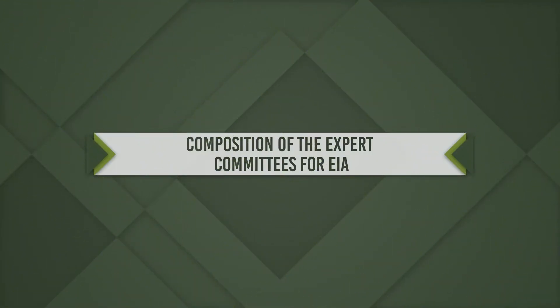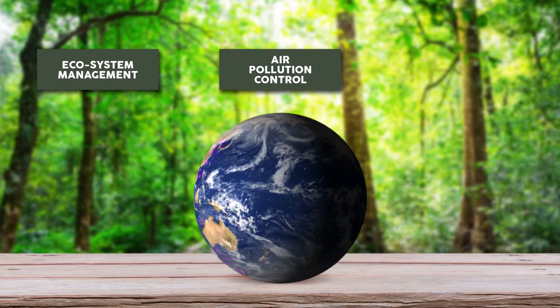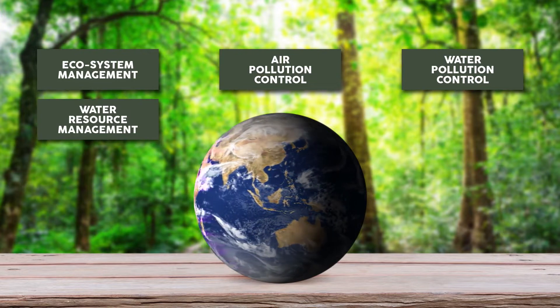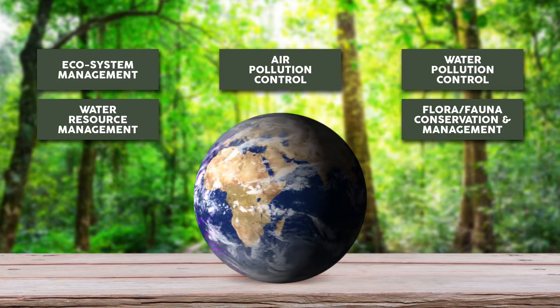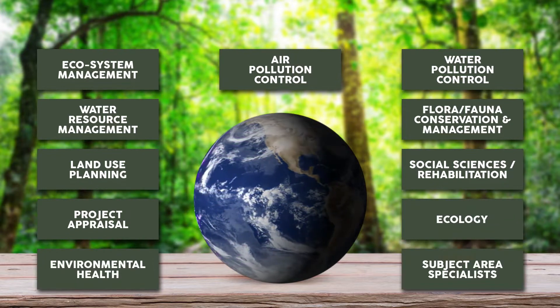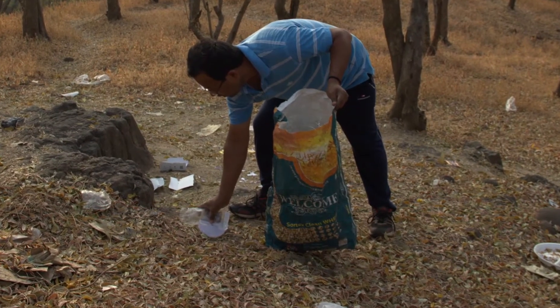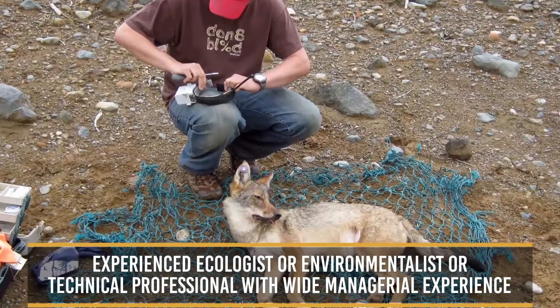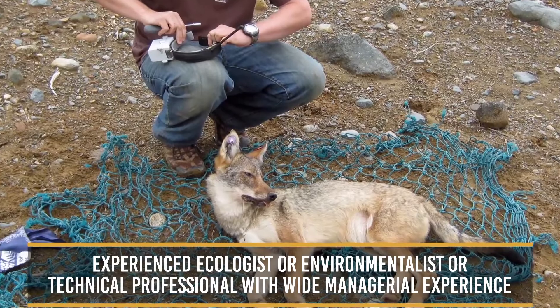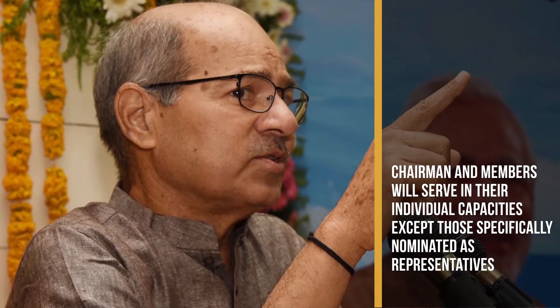First, we are going to see about the composition of the expert committees for EIA. The committees will consist of experts in the following sectors: Ecosystem Management, Air Pollution Control, Water Pollution Control, Water Resource Management, Flora and Fauna Conservation and Management, Land Use Planning, Social Sciences and Rehabilitation, Project Appraisal, Ecology, Environmental Health, and Subject Area Specialists. It also consists of representatives of NGOs and persons concerned with environmental issues. The chairman will be an outstanding and experienced ecologist, environmentalist, or technical professional with wide managerial experience in the relevant development. The representative of the impact assessment agency will act as member secretary. Chairman and members will serve in their individual capacities except those specifically nominated as representatives. The membership of a committee shall not exceed 15 members.